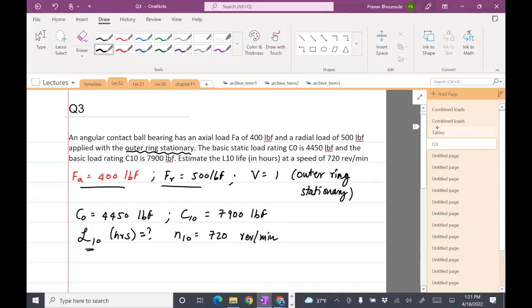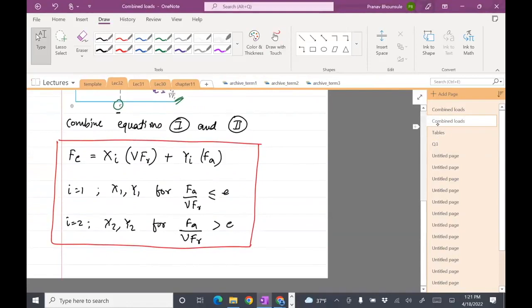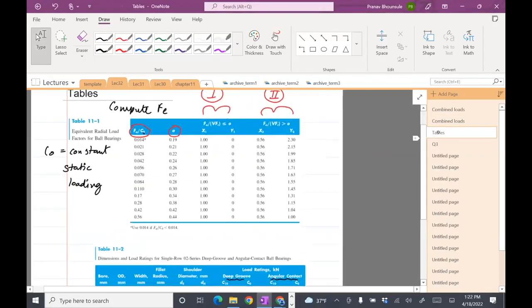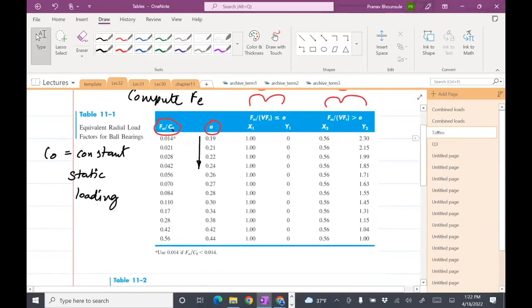So the formula is FE equals XI V times FR plus YI times FA. What do we need for this? We need to compute, clearly, we need the ratio E. Once we get E, we can then figure out what these constants are. And once you have the constant, we can find the equivalent load. How do we get E? Well, there's a table which gives us E right here. So then how do we get E? Well, we need to compute this. Looks like we need to compute this factor FA divided by C0.